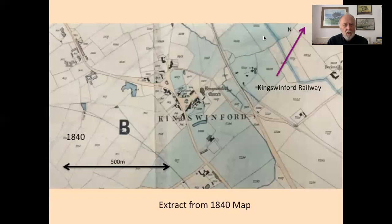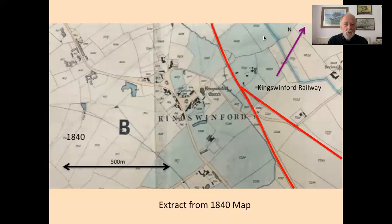Looking at the 1840 map, it's perhaps not so well drawn, but the differences are very obvious. The major change in King Swinford is that the King Swinford railway now runs through it, on its way from the Ashwood Basin to the mines in the Corbyns Hall area. You can see the main line of the King Swinford railway and the incline that went up where the avenue of trees used to be, to Shut End ironworks where Shut End Hall once stood.